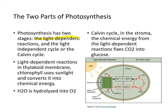Photosynthesis has two stages: the light-dependent reaction and the light-independent cycle, or the Calvin cycle. Light-dependent reactions occur in the thylakoid membrane — light comes in, takes ADP and water, and puts out ATP and NADPH. Chlorophyll uses sunlight to convert it into chemical energy. The water H2O is hydrolyzed into oxygen, which gets released into the atmosphere. In the Calvin cycle, in the stroma of the chloroplast, the chemical energy from the light-dependent reaction fixes CO2 — this is what produces the glucose.